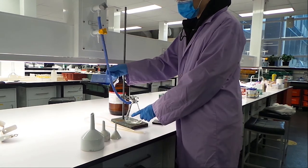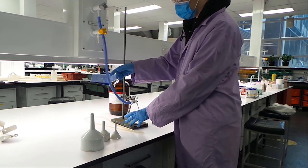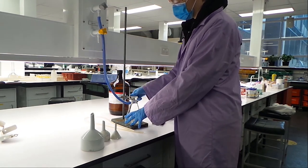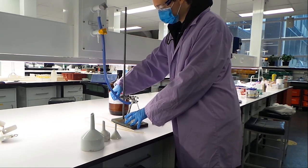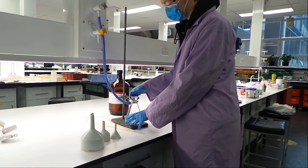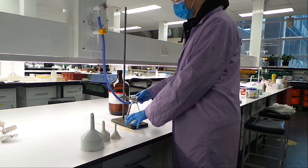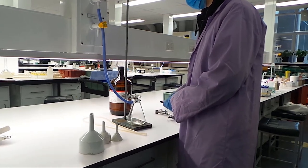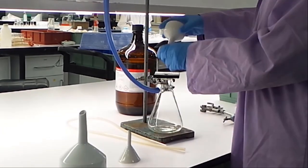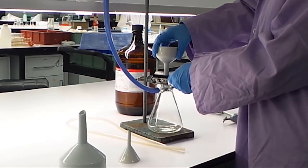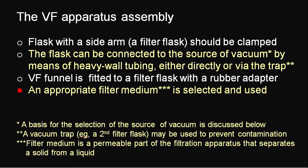Once a funnel is chosen, you will need to secure your vacuum flask so it does not fall over once the vacuum is on. Use a retort stand to do this. Once secured, you can put a rubber mat between your funnel and your flask to make sure it is sealed.